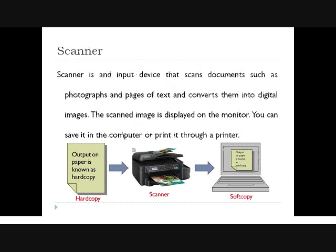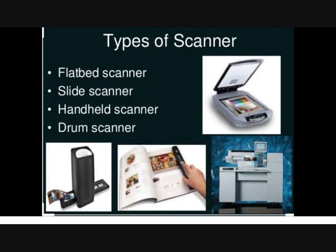The scanner is an input device that scans documents such as photographs and pages of text and converts them into a digital image. The scanned image is displayed on the monitor and can be saved in the computer or printed. Output on paper is called a hard copy, and output on the screen is called a soft copy. A scanner converts a hard copy into a soft copy. For example, an old photo can be scanned and saved. Types of scanners include flatbed, slide, handheld, and drum scanners.